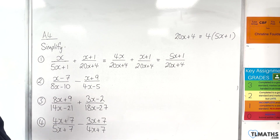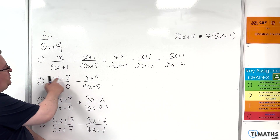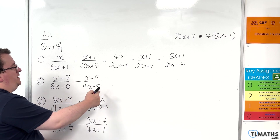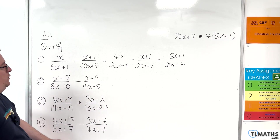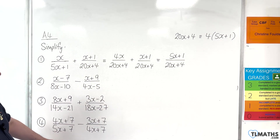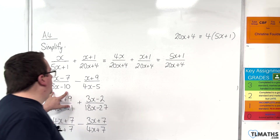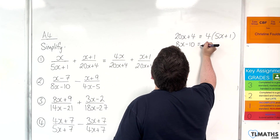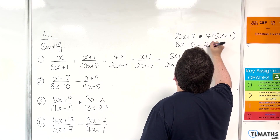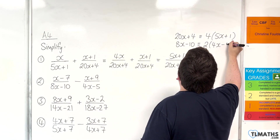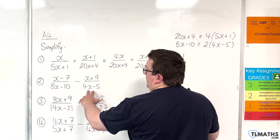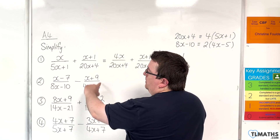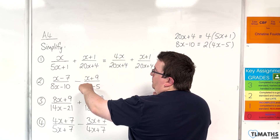Number 2: we've got x take away 7 over 8x take away 10, minus x plus 9 over 4x take away 5. Notice how 8x take away 10 — we can factor out 2 to get 4x take away 5, and we've got that 4x take away 5 in the second denominator. So to get the denominators the same, we multiply the second fraction top and bottom by 2.